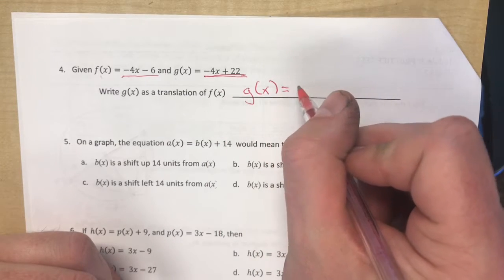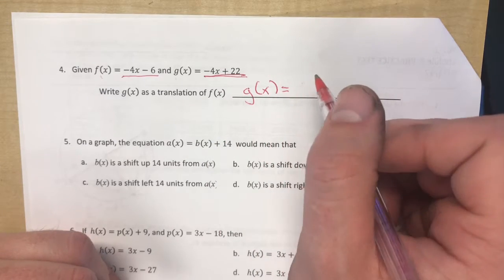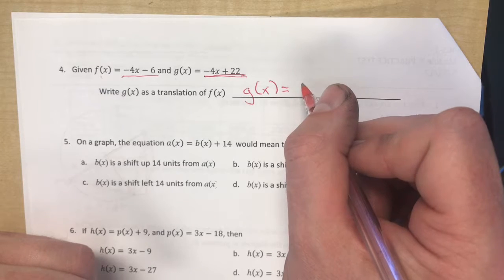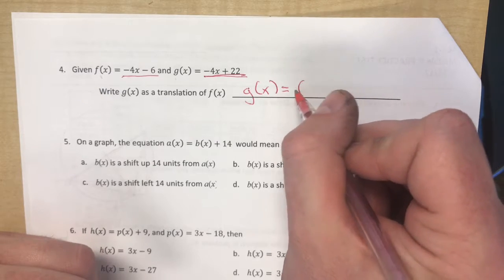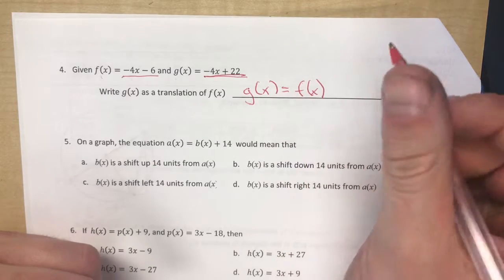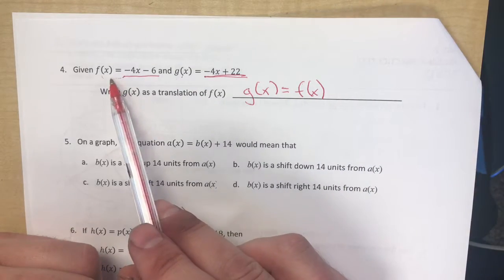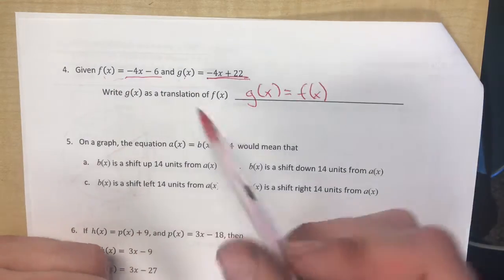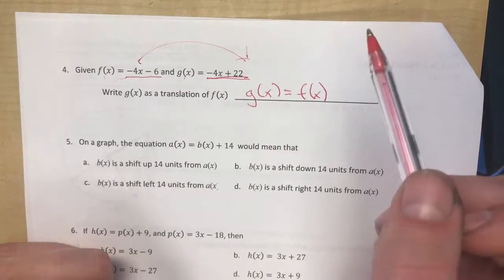So we need to write g(x) but not like this. So we need to make g(x) as a translation of f(x). So g(x) equals f(x). So g(x) equals f(x), but then we need to change it so it's equal to g(x).